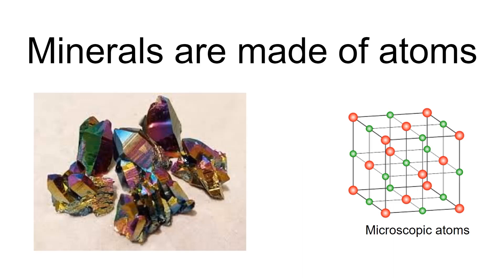Here's why it works: minerals are made of atoms. These minerals, getting smaller and smaller, are made of atoms on a molecular level. The atoms are put together in a network called a crystal lattice, and we're going to be looking at the ratio of how many different atoms there are within the minerals.